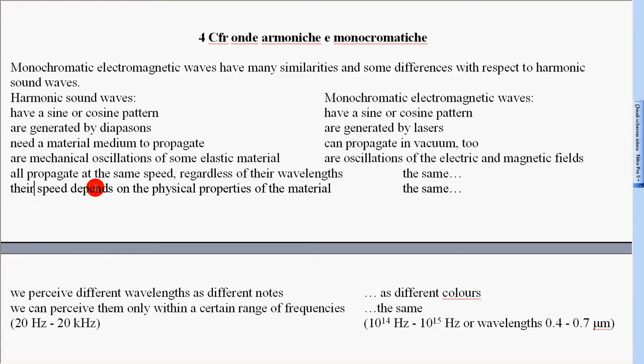And their speed depends on the physical properties of the material. For harmonic sound waves, we perceive different wavelengths as different notes. Instead, for monochromatic electromagnetic waves, we perceive different wavelengths as different colours. We can perceive harmonic sound waves only within a certain range of frequencies from about 20 Hz to about 20 kHz.